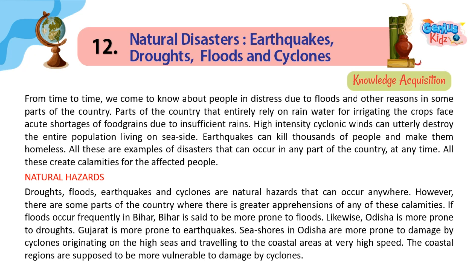Natural Hazards: Droughts, floods, earthquakes and cyclones are natural hazards that can occur anywhere. However, there are some parts of the country where there is greater apprehension of these calamities. If floods occur frequently in Bihar, Bihar is said to be more prone to floods. Likewise, Odisha is more prone to droughts, and Gujarat is more prone to earthquakes. Seashores in Odisha are more prone to damage by cyclones originating on the high seas and traveling to coastal areas at very high speed. The coastal regions are supposed to be more vulnerable to damage by cyclones.